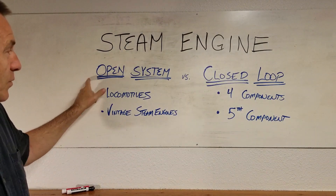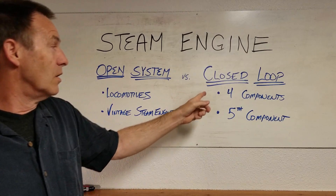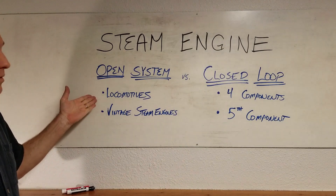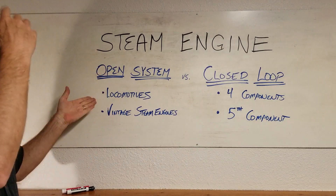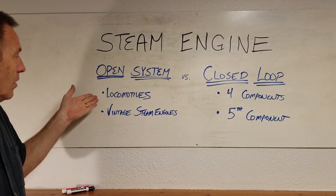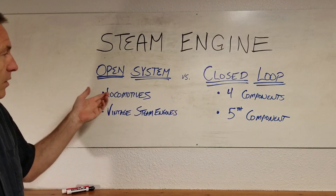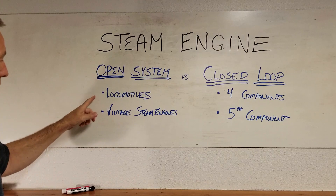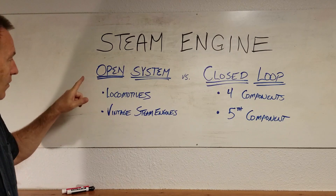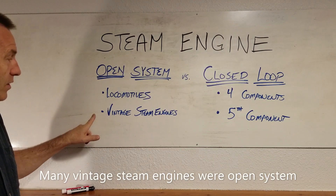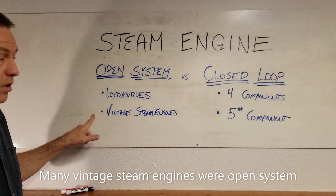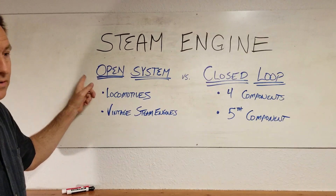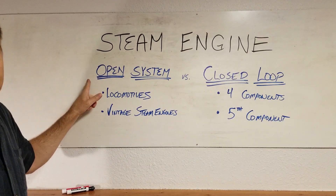What's the difference between an open system and a closed system? The steam locomotives just blew steam into the air. They did not collect it and recycle it back around. And so even the vintage steam engines were open systems. Open systems suffer because they're energy deficit.